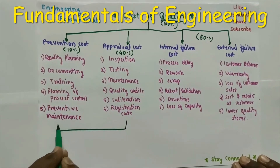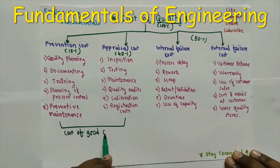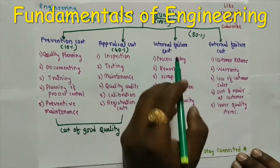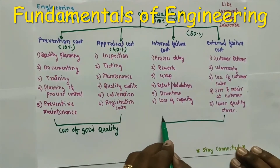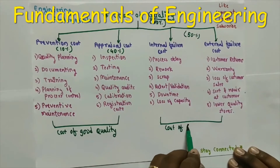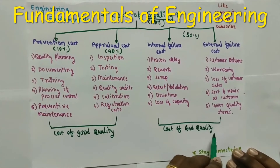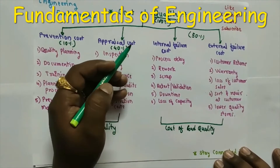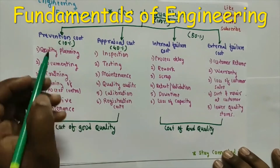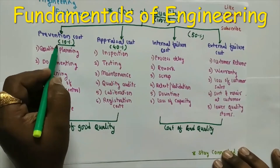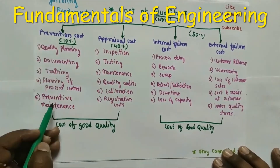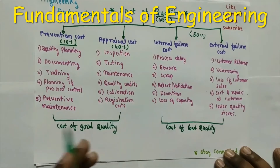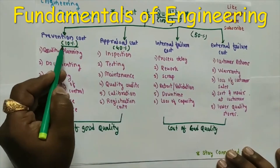Prevention cost and appraisal cost are the cost of good quality — incurred when we want to produce a good product for the customer. Internal failure cost and external failure cost are the cost of bad quality. To achieve zero defects, we must spend more attention on prevention cost; this minimizes internal failure, external failure, and appraisal costs.